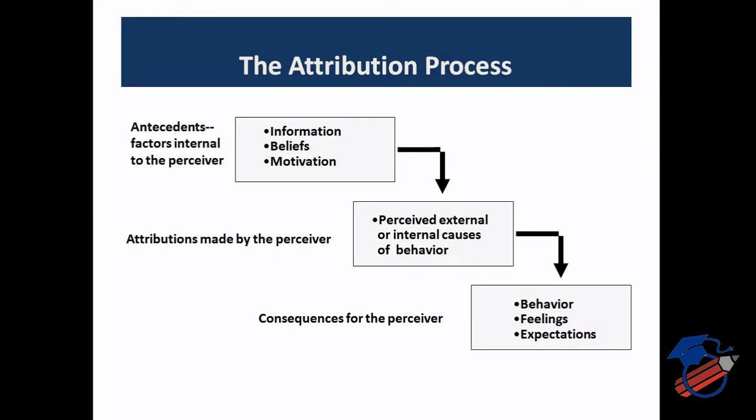Second stage is the attribution made by the perceiver — the perceiver gives some reasons or causes for behavior; these can be internal or external. On the basis of that attribution given for someone else's behavior or one's own behavior, the result is in the form of behavior, feeling, or expectation — either we behave in a particular manner, our feelings develop in a particular fashion, or we start expecting or stop expecting from that person or from ourselves. This is the whole attribution process.